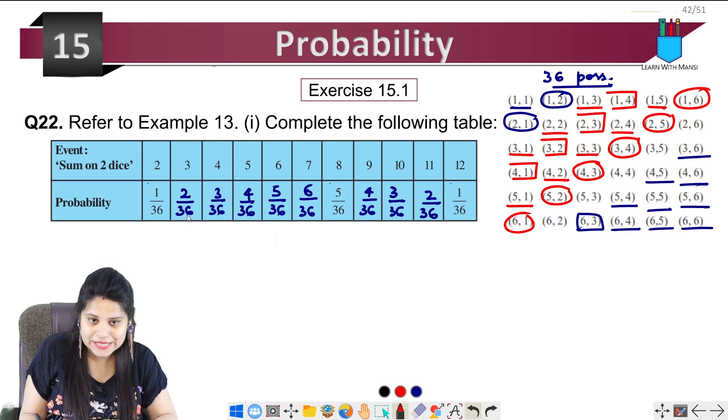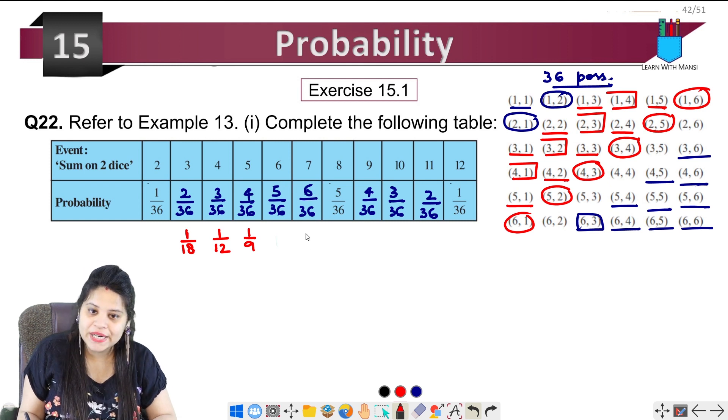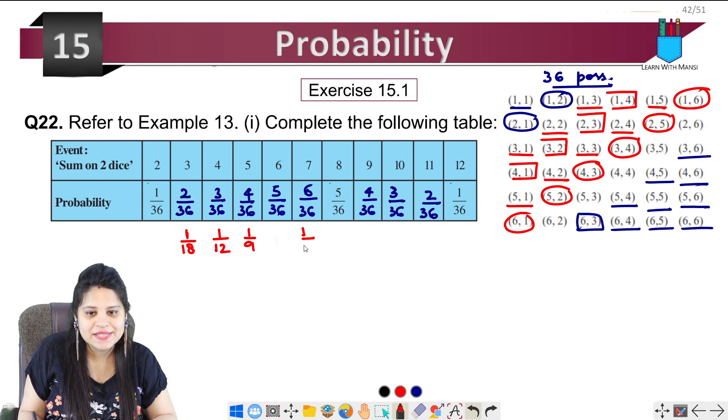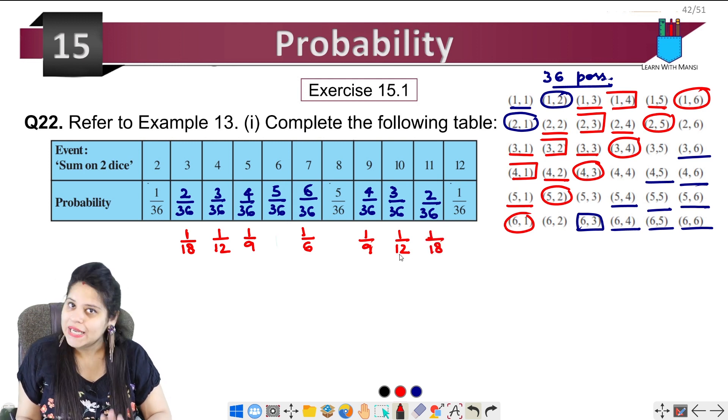This is 2 upon 36, we will cut it. So you can do it: 1 upon 18. 3 upon 36 is 1 upon 12. 4 upon 36 is 1 upon 9. 5 upon 36 will not be cut as it is. 6 upon 36: 6 divided by 3 is 2, 36 divided by 3 is 12, so 1 upon 6. 4 upon 36 again 1 upon 9. 3 upon 36 is 1 upon 12, then 2 upon 36 is 1 upon 18. So this way you can write it in the simplest form.